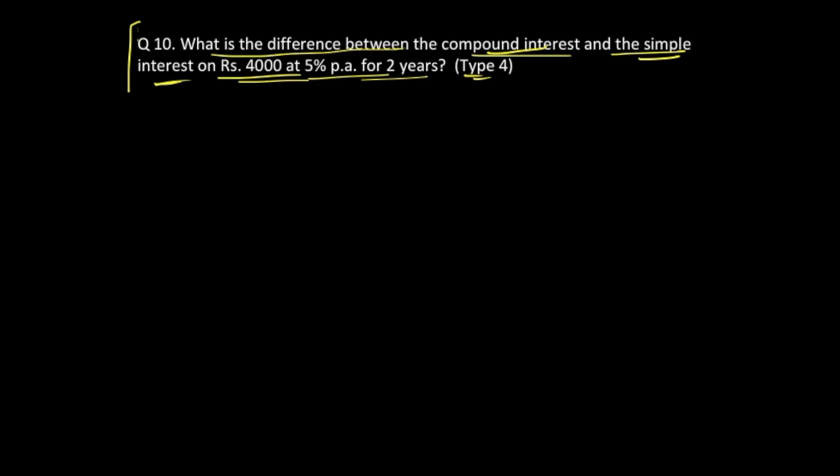In this question, the simple interest on 4000 at 5% per annum for the first year is going to be 5% of 4000. As we know from our percentage method, this equals 5 by 100 into 4000. The zeros cancel out, and 40 times 5 gives us 200.